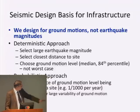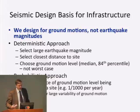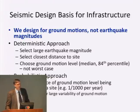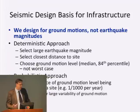The probabilistic approach tries to take on that risk number more directly and say, I'm going to design for a ground motion that has a one in a thousand chance of occurring in a given year. Once you've said that, you've recognized that you are not designing for the worst case. There is something higher that could occur, and we're trying to find something that's acceptably rare.